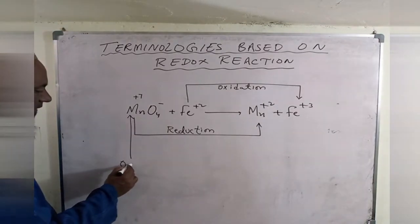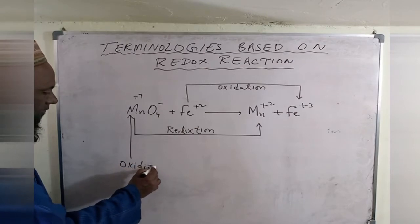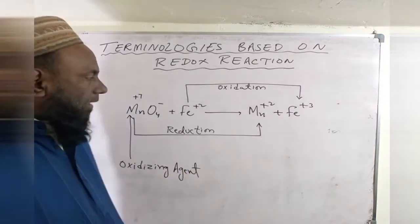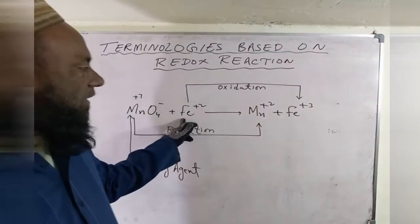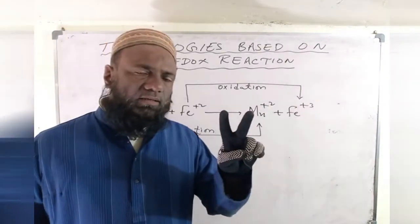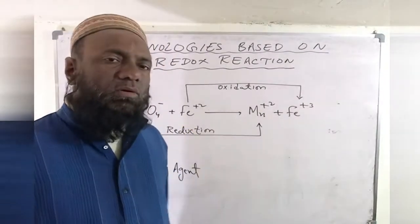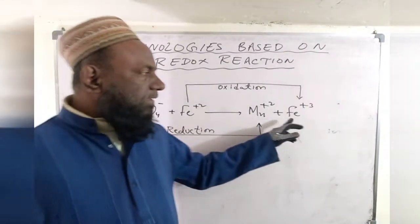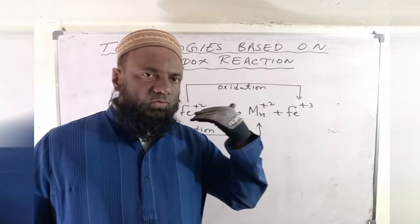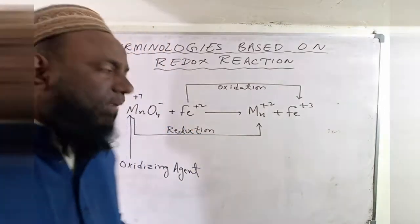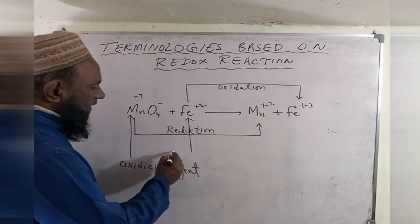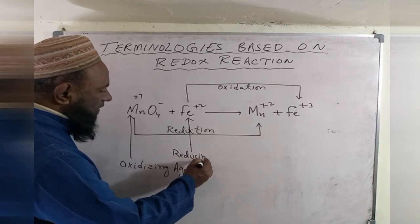So MnO4⁻ is our Oxidizing Agent. Now looking at Fe: Fe is +2, going to Fe +3. Fe²⁺ means it had a deficiency of 2 electrons; now it has a deficiency of 3 electrons. So Fe has lost one electron — one electron has been donated. Therefore, Fe is the Reducing Agent.